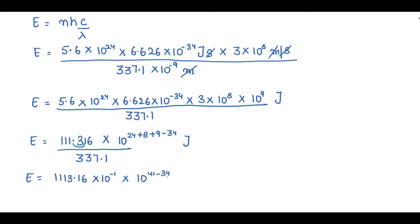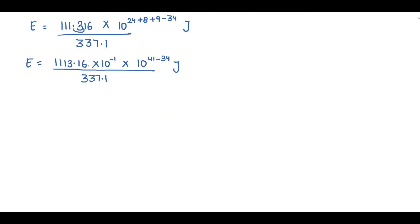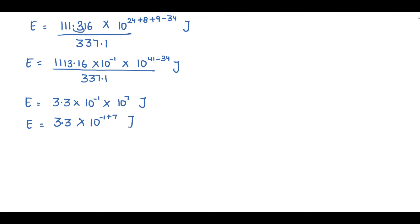Dividing 11.316 by 337.1 gives approximately 3.3 into 10 raised to power minus 1. Combined with 10 raised to power 7, the total is 3.3 into 10 raised to power (minus 1 plus 7) = 3.3 into 10 raised to power 6 joules. Therefore, the energy or power of this laser is 3.3 into 10 raised to power 6 joules.